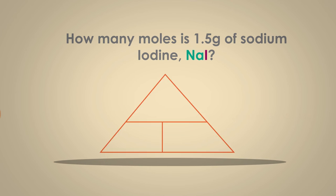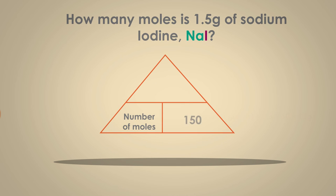This is also known as a triangular equation. You can write it like this. To find any one quantity, cover it up with your finger to give the rearranged equations. We want to find moles. There are 0.01 moles of sodium iodide.